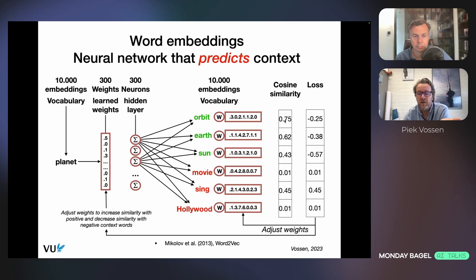How similar or dissimilar are they from the representation of planet? This is the cosine similarity. If the cosine similarity is high, the representations are good representations. If the cosine similarity is low, they're not good. So we derive a loss to adapt these weights to make planet more similar to the words that it co-occurs with. We do the opposite with other words it doesn't co-occur with. We take random words from the vocabulary - movie, sing, Hollywood. We should change the weights of these words and also for planet to make them dissimilar.